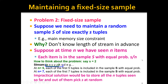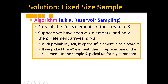The solution is actually quite intuitive and simple. It's called reservoir sampling, and it goes as follows. First, store all the first S elements of the stream into S. Then, suppose we have seen n minus one elements and now the nth element arrives. With probability S over n, we keep this nth element, and if we decide to keep it, it replaces one of the old elements in sample S, chosen uniformly at random.